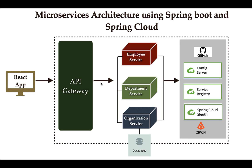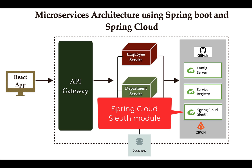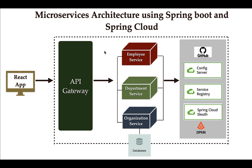Next, we are going to implement distributed tracing in the microservices architecture. Spring Cloud provides the Spring Cloud Sleuth module which we can use for distributed tracing. Along with Spring Cloud Sleuth, we will also use Zipkin to visualize the tracing log information in a user interface. Zipkin provides a web UI to track trace information.